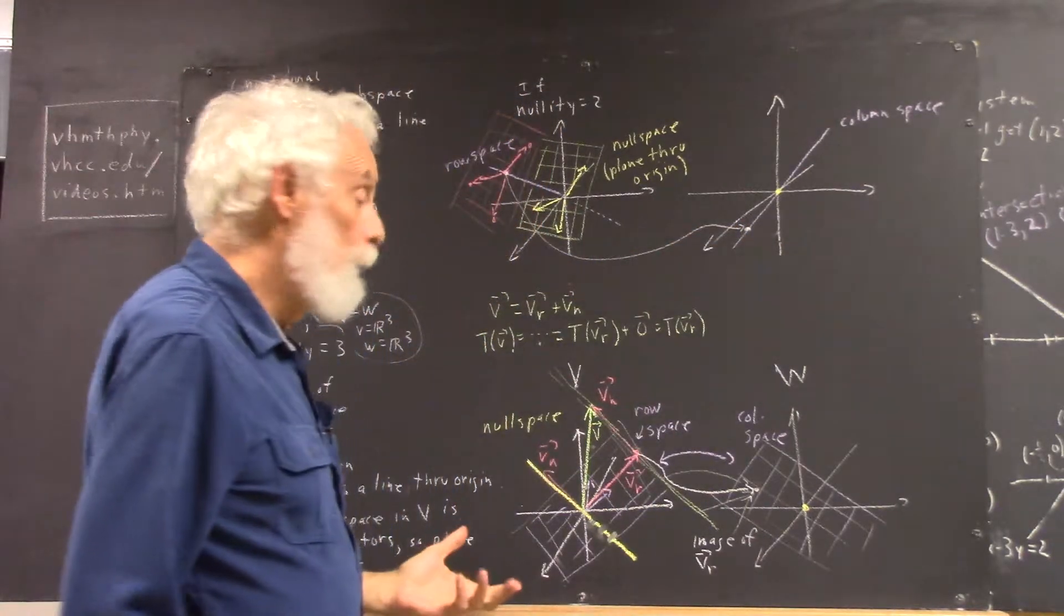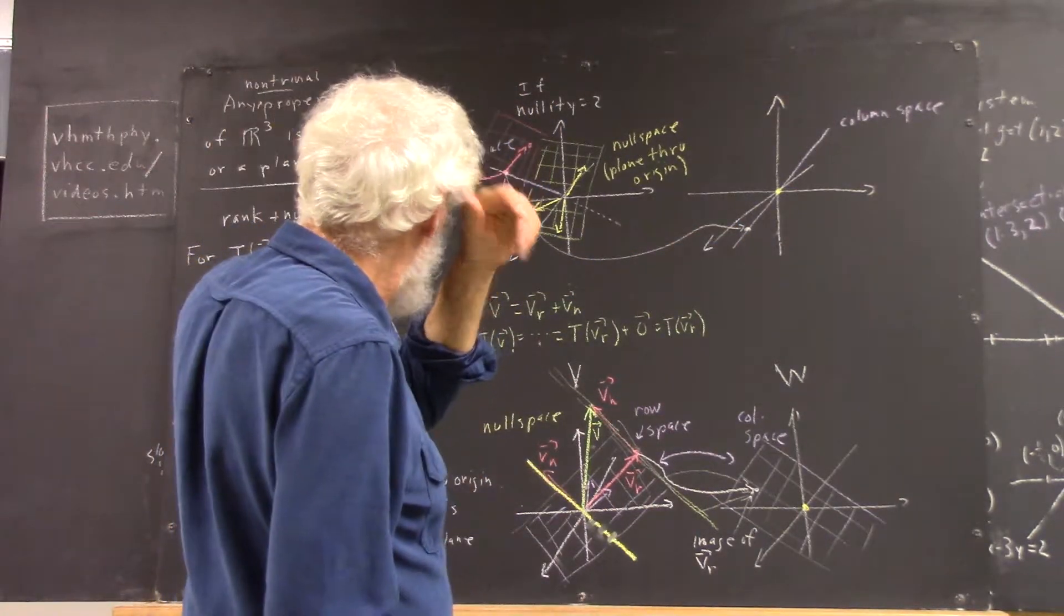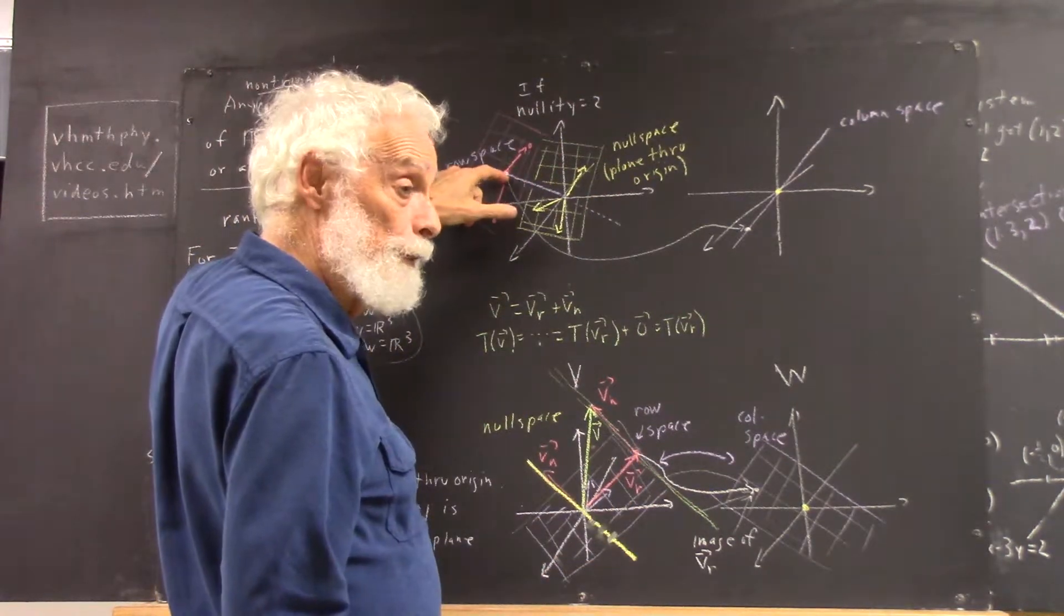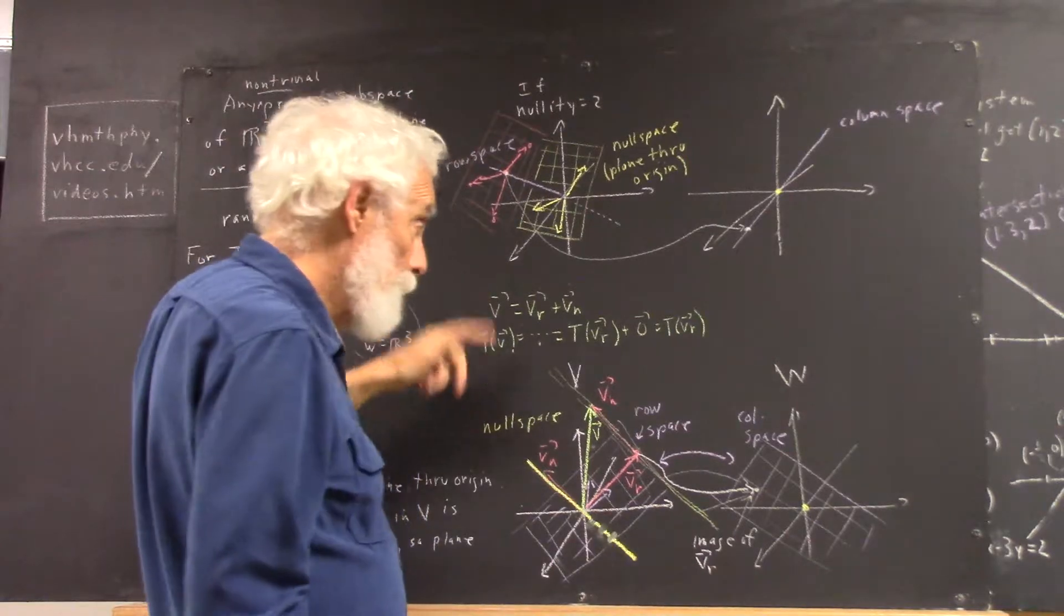Because, why? Well, because if I add any vector in the null space to this vector in the row space, I'm going to have the same thing. I'm going to have a Vr, which is the vector in the row space,